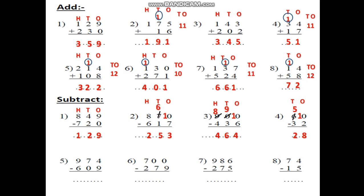974 minus 609. 100s, 10s and 1s. Start from the 1s. 4 minus 9, can't be. More on the floor, go next door and take 10 more. 4 will be 14. And 7 minus 1 will be 6. 14 minus 9. After 9: 10, 11, 12, 13, 14. It will be 5.